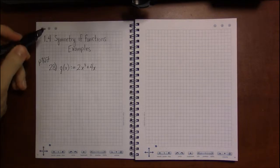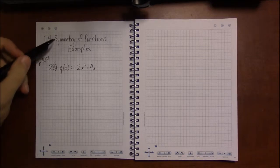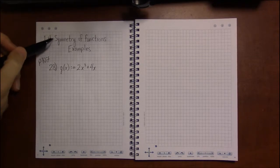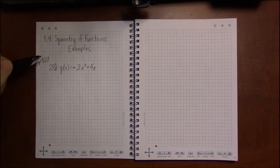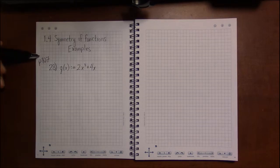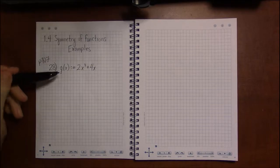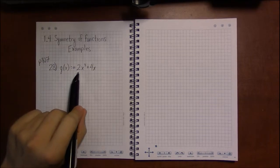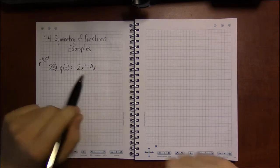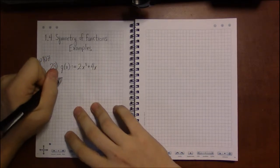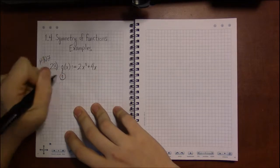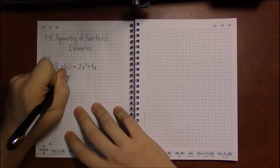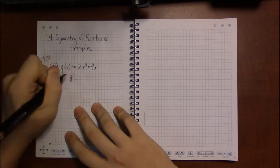Let's take a look at some examples of determining the symmetry of various functions. I'm looking at the homework in section 1.4 on page 107, number 28, where we're given that g of x is defined to be 2x cubed plus 4x.